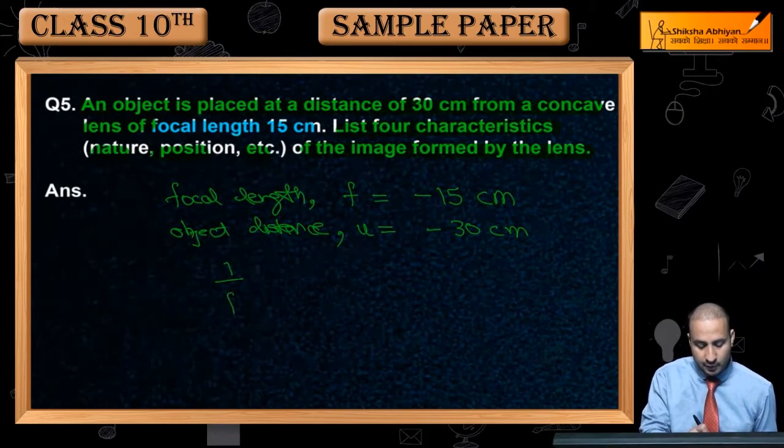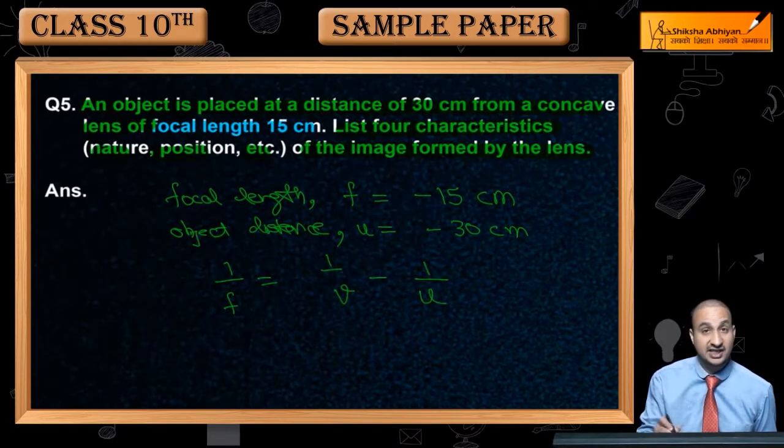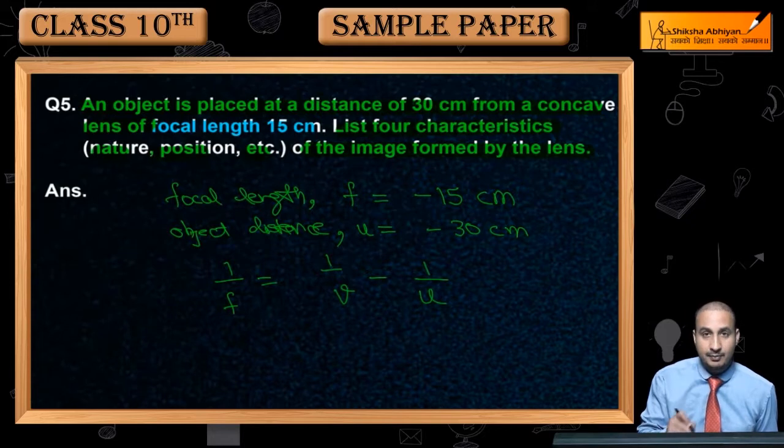You know that 1 upon f is equal to 1 by v minus 1 by u. This is your lens formula.